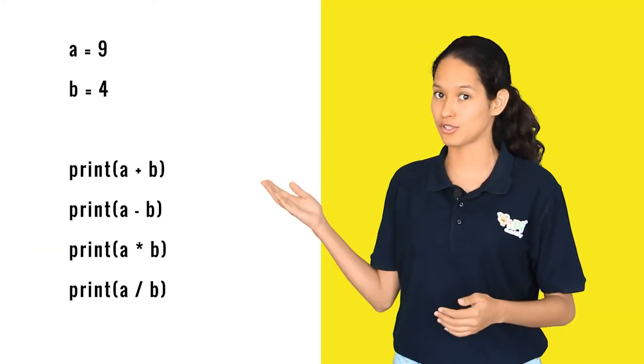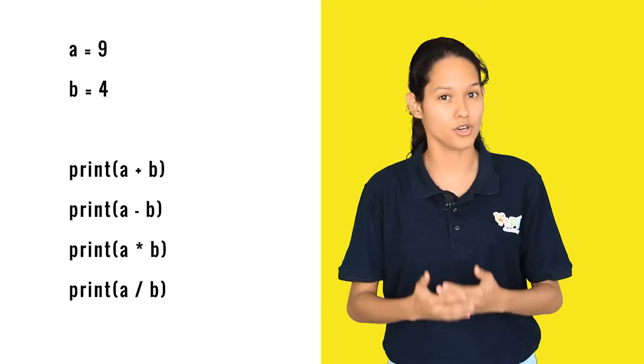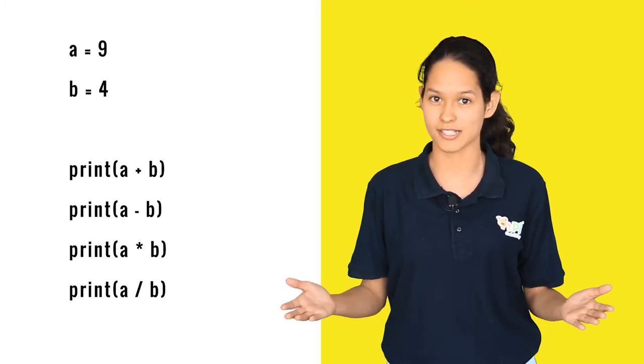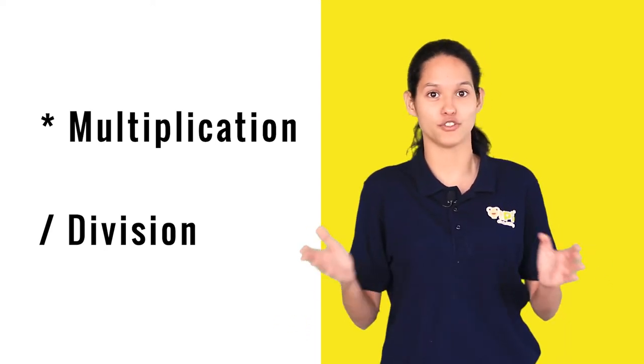You can try to change the values of a and b and use them in your print statement and find out what would be the output for each operator. Remember to use the asterisk symbol for multiplication and the forward slash for division.